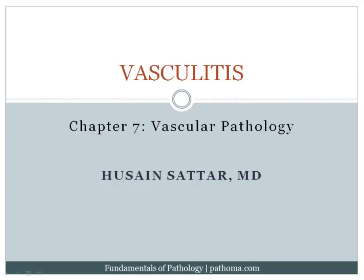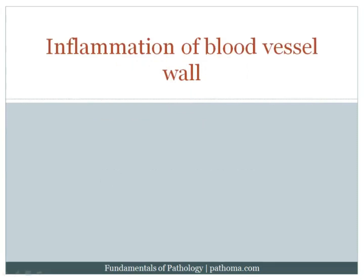The next chapter in your text is vascular pathology, and the first section we're going to talk about is vasculitis. Vasculitis is defined as inflammation of the blood vessel wall. You can have inflammation of the arterial wall or the wall of veins. However, in this particular section, we're going to focus on inflammation of the arterial wall.